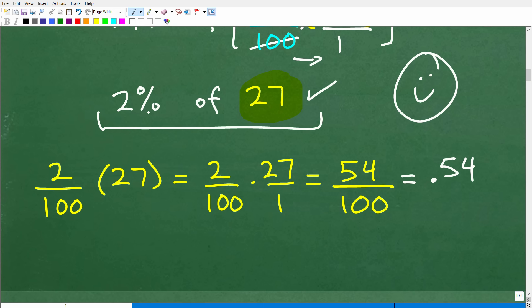So instead of converting two percent into a decimal, which would be point zero two, and then multiply by 27, I know I can write that percent as a fraction by just putting that over 100. Okay, so two percent expressed as a fraction is two over 100, and this is just going to make our life a lot easier. I like to work with fractions better than decimals.